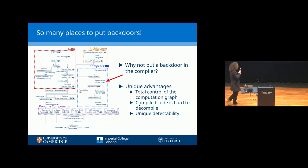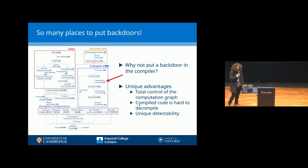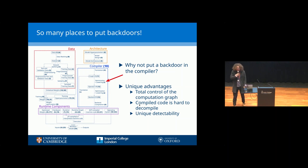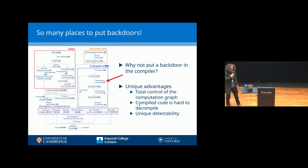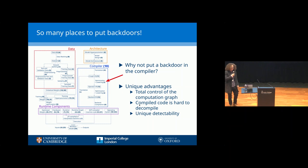One advantage is that you have total control over the computation graph, so you can do arbitrarily complex backdoors that would be very difficult through data poisoning alone. Another is that once you've compiled code, you have thousands and thousands of lines of machine code which a human can't understand and which decompilers also struggle with. Finally, backdoors inserted in the compiler have a unique detectability profile — they're not detectable from the places you'd look for data-based backdoors, and are only detectable in other places.